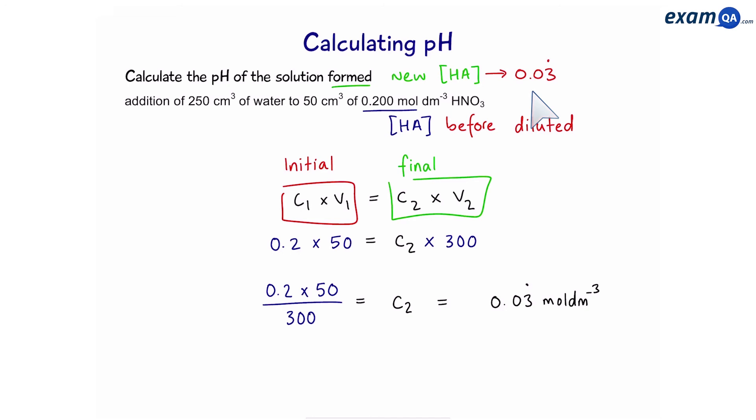Then, we can work out that the concentration of hydrogen ions should be the same, because it's a monoprotic acid. So, we're going to minus log the concentration of hydrogen ions, and the pH is 1.48.